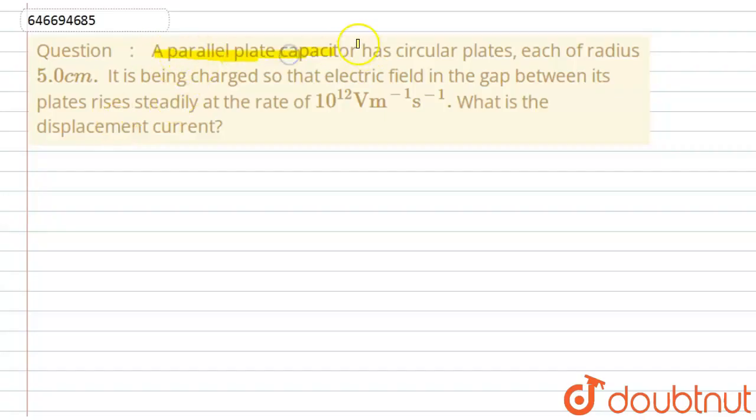parallel plate capacitor has circular plates, each of radius 5 centimeter. It is being charged so that the electric field in the gap between its plates rises steadily at a rate of 10^12 volt per meter per second. Then what is the displacement current?